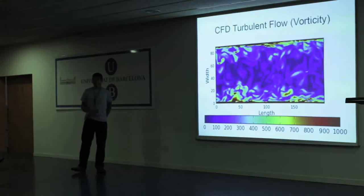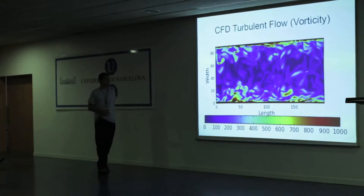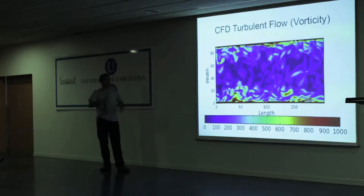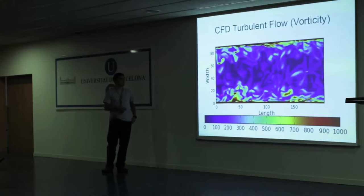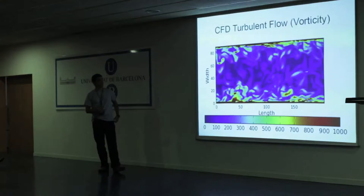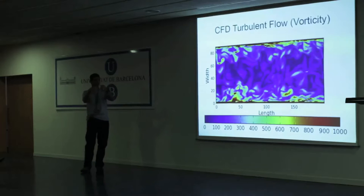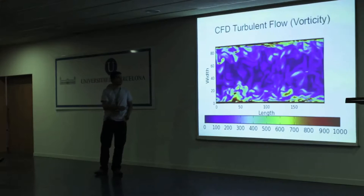We worked with a CFD code - specifically a turbulent flow code - because we wanted something challenging. What you see is a two-dimensional cut of a three-dimensional tube with a compressible gas flowing through it. You have the width of the tube and the length. This is a vorticity plot ranging from zero to one thousand, where red means high vorticity. Vorticity is essentially the spinning speed of a particular point in space.